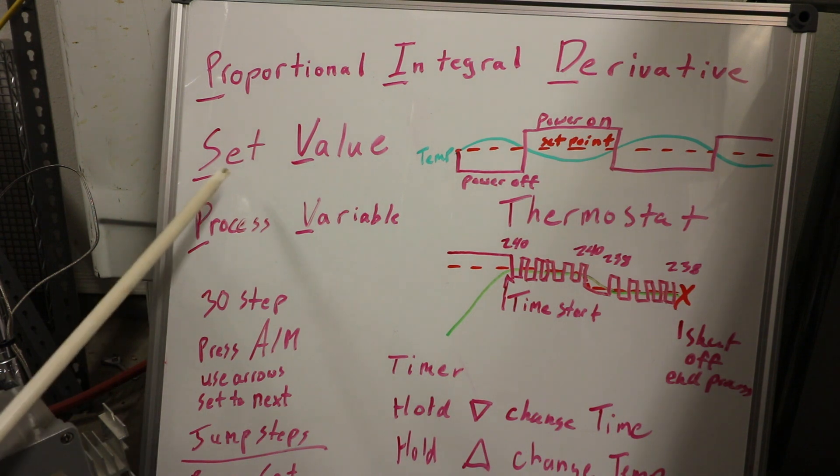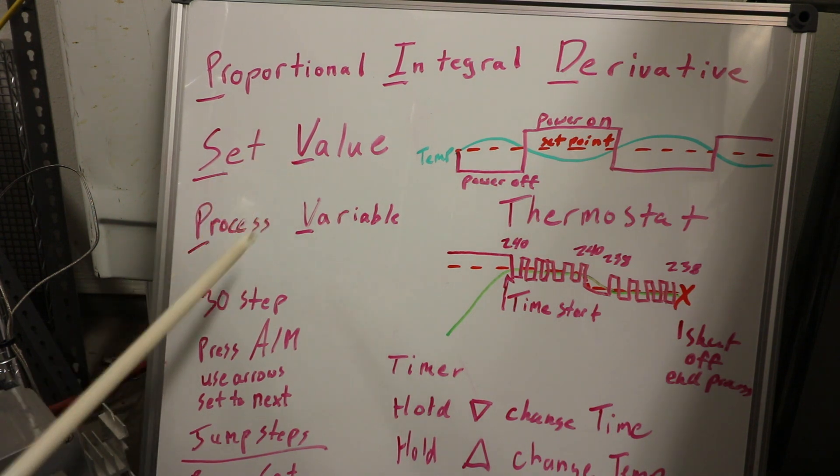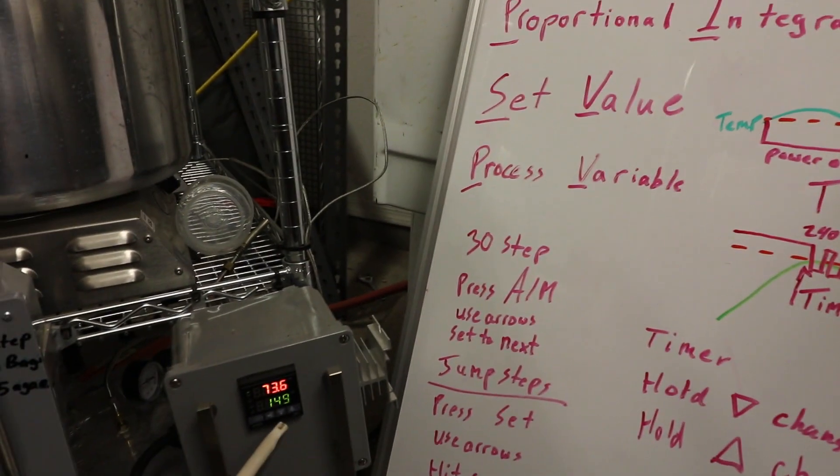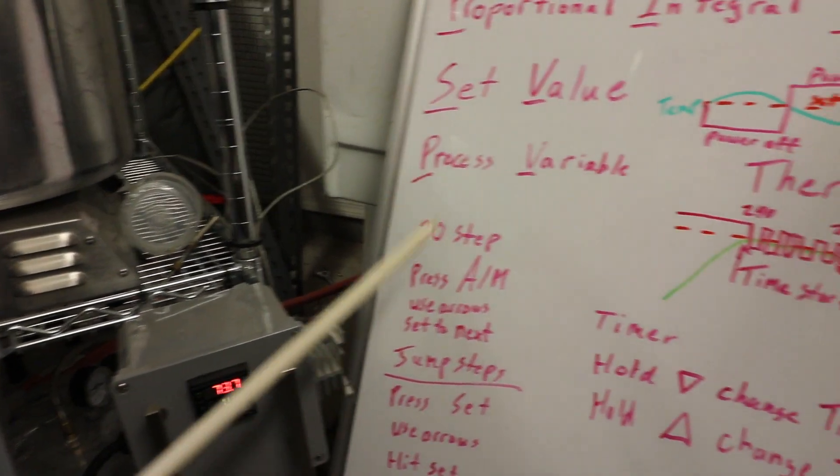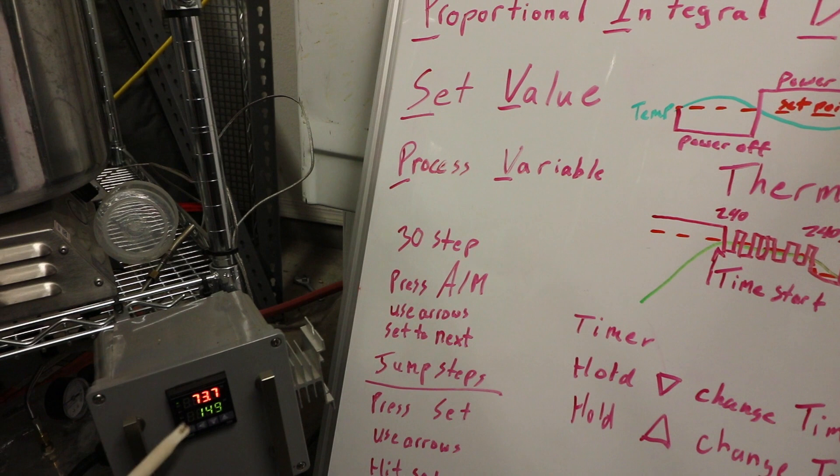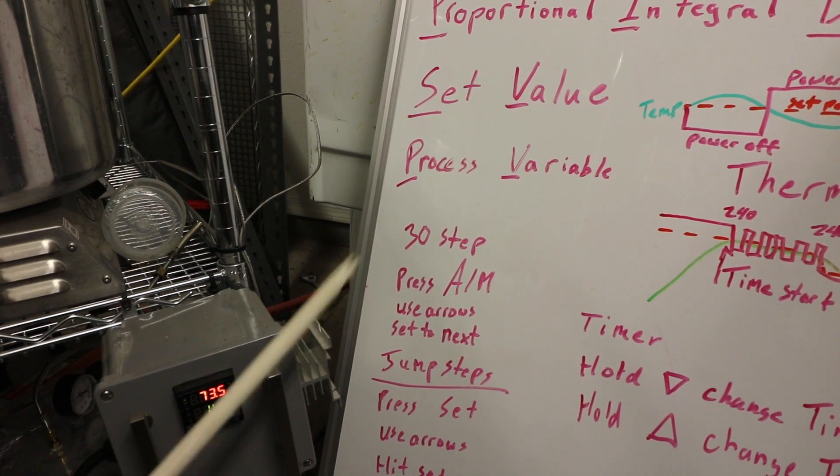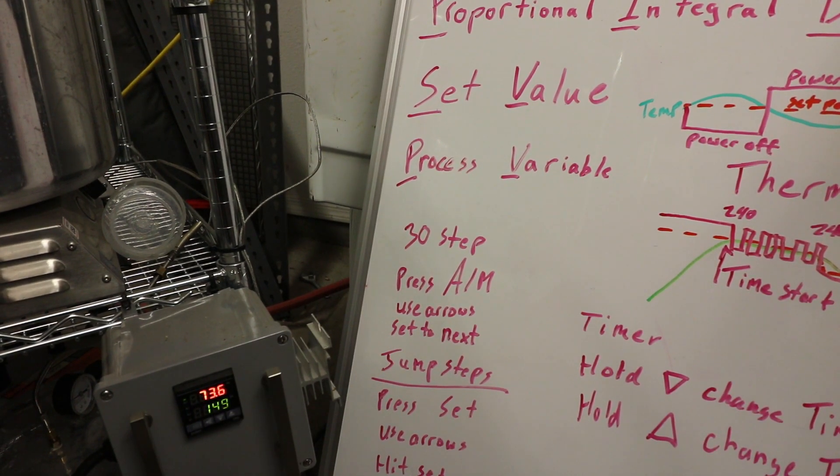You have the set value, SV, usually green in these. And then you have the process value, the red one. So the set value is what you want it to be and the process value variable is what it's actually reading. Right now I want it to be 149 but it's actually only 73 in here because I have it turned off.